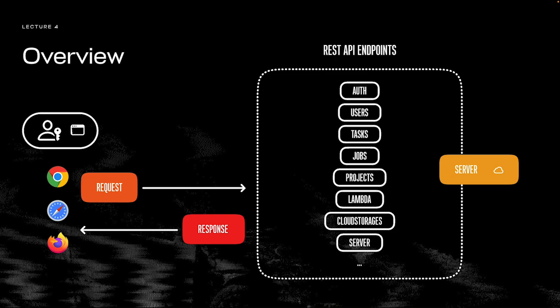Here's an infographic. The server has many REST API endpoints. They cover most, if not all, of the server objects and provide a number of operations for them. The endpoints are grouped by contexts: tasks, projects, users, etc.